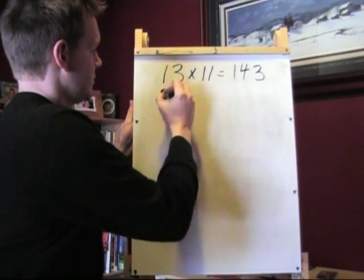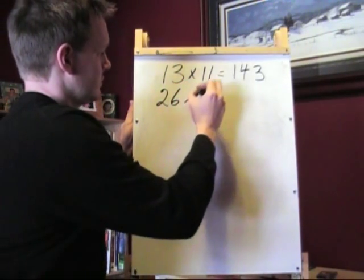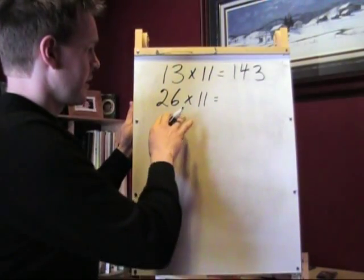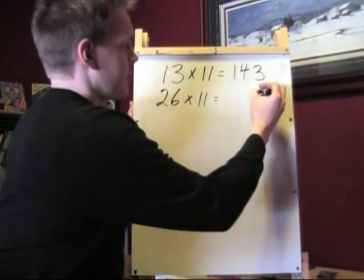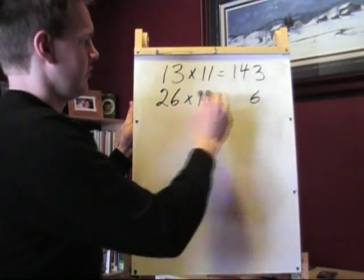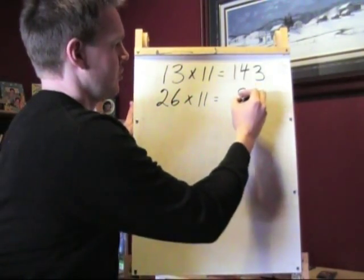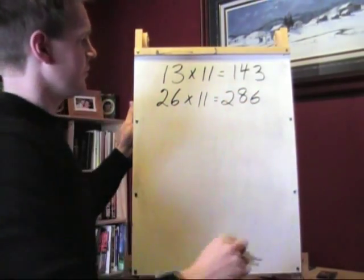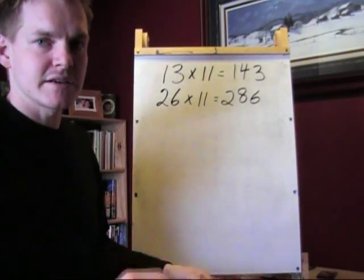Let's do another one. Remember, this is just a quick trick. We'll start out by writing down the number from the ones column, 6. Then, we add these two together, 2 and 6 is 8. And then, we write down the number from the tens column. 26 times 11 is 286.